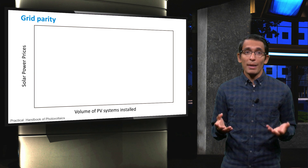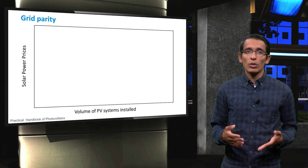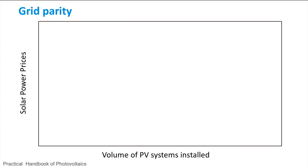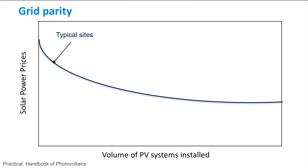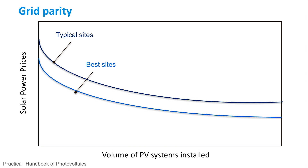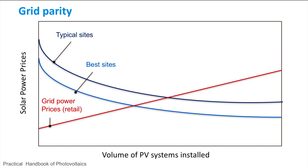Here you see the difference between grid and socket parity. On the x-axis we have the volume of PV systems installed, while on the y-axis we have the price of solar power. A dark blue curve represents PV installed in average locations — as more PV is installed, the price goes down due to upscaling and maturing markets. A light blue curve represents PV installed in ideal locations, where more power is produced at the same cost, making PV cheaper. A red line represents the retail cost of the same amount of energy to a consumer, which scales linearly with the amount of energy.